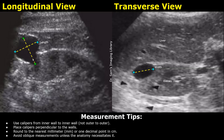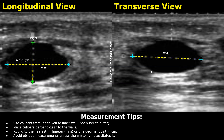Then rotate the probe to get a transverse image of the cyst, and take a horizontal measurement of it to measure its width. This is a simple breast cyst. To measure this cyst, place the calipers accordingly in this manner to get the length and height in the longitudinal plane, and measure the width in the transverse plane.